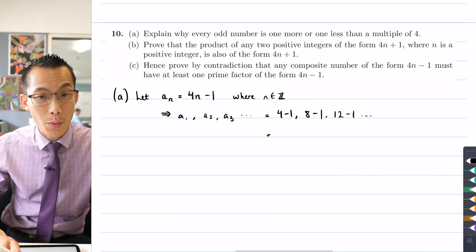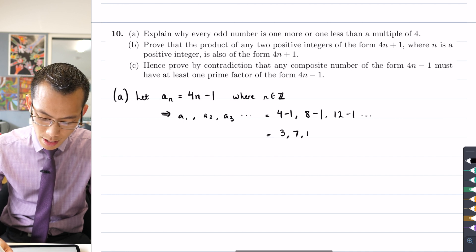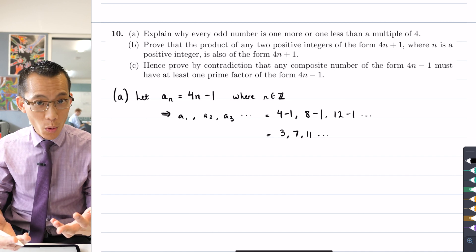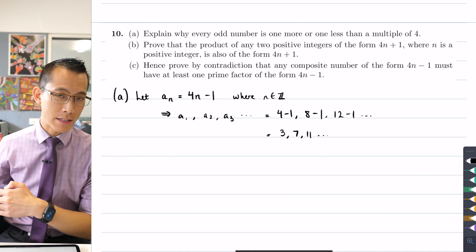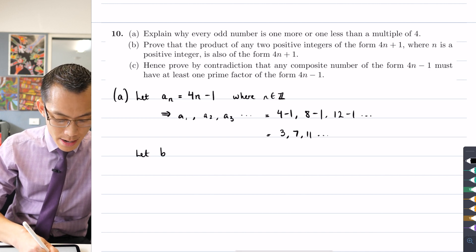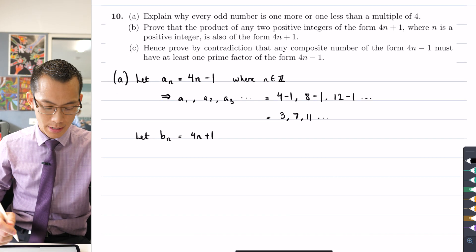So the numbers we're getting out of this, the numbers that we're generating, are 3, 7, 11, and so on. If we then think about all those numbers that are one more than a multiple of four, that's a whole different sequence. So I can also say let B sub N, let that make the ones that are bigger.